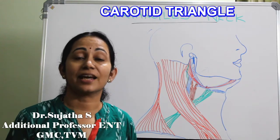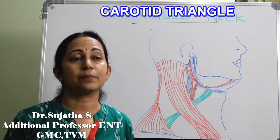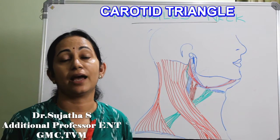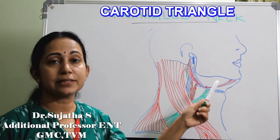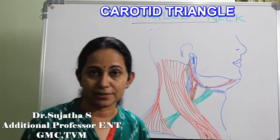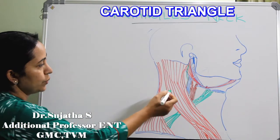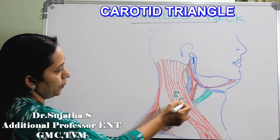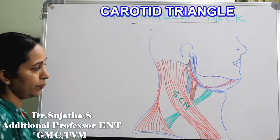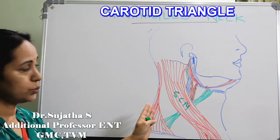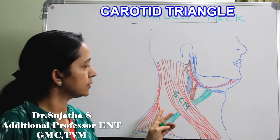In the triangles of the neck, we discussed the submandibular triangle and submental triangle in previous classes. This is the sternocleidomastoid muscle, dividing the neck into an anterior compartment and a posterior compartment.